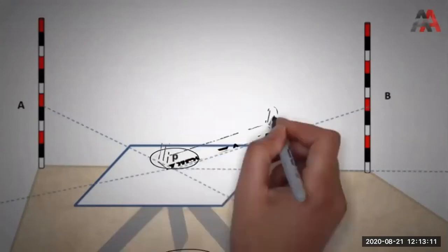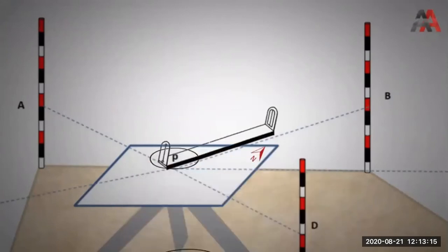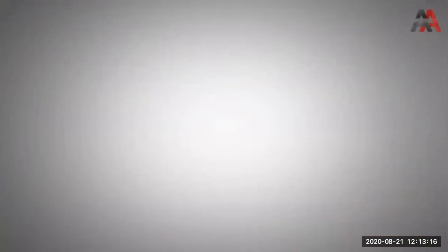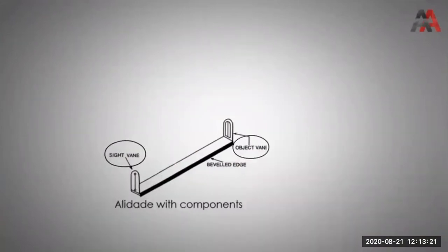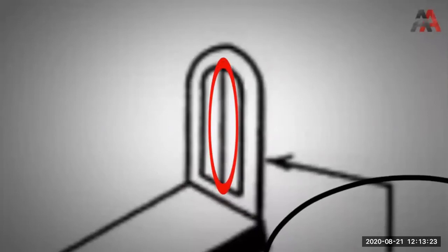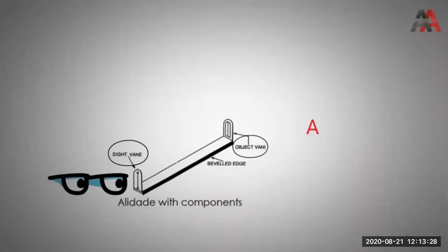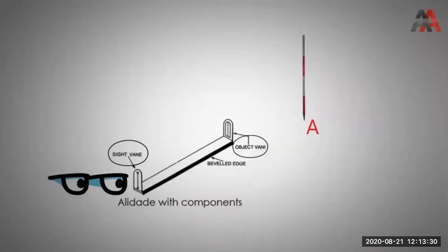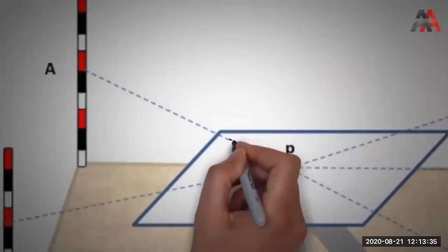Then I will range points A, B, C, D using the alidade. Through the object vane there is a horsehair. I will sight point A, draw a ray from the station point, measure the ground distance to A, use a suitable scale, and plot point A on the paper. The same procedure is repeated for all other points.